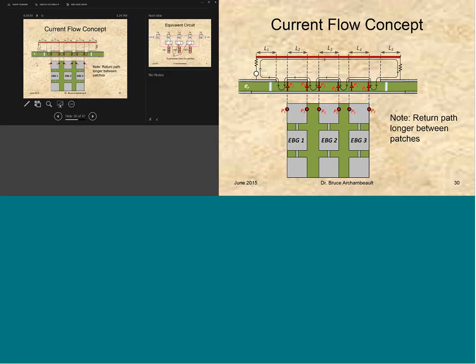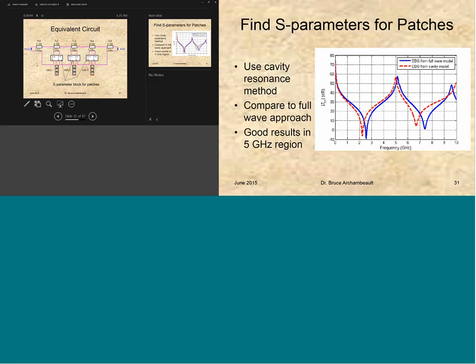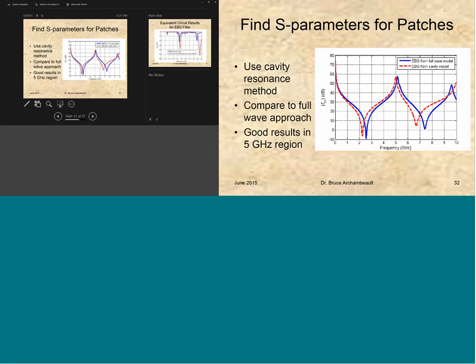So we had a transmission line segment where the reference of the transmission line was this impedance of the port, of what we just analyzed there. And so we basically put a, normally in SPICE you end up with a perfect ground. We put an imperfect ground in there, okay, and that's how we did this. And found that indeed if we do this, the full wave and this circuit analysis based on the cavity model agree pretty well. And so we thought that we were getting pretty good results in the 5 gigahertz region with this simplified approach.